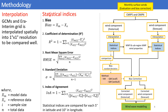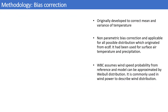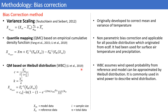These are the five statistical indexes we used: Bias, Coefficient of Determination R², RMSE, Standard Deviation, and Index of Agreement. For the bias correction method, we applied three: first, variance scaling; second, quantile mapping based on empirical cumulative density function; and third, quantile mapping based on variable distribution function.